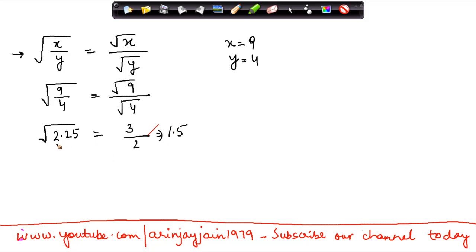Now if I have to take the under root of 2.25, how do I compute that? If under root of 2.25 is equal to 1.5, if this were to hold through, then that would mean that 2.25 is equal to the square of 1.5.